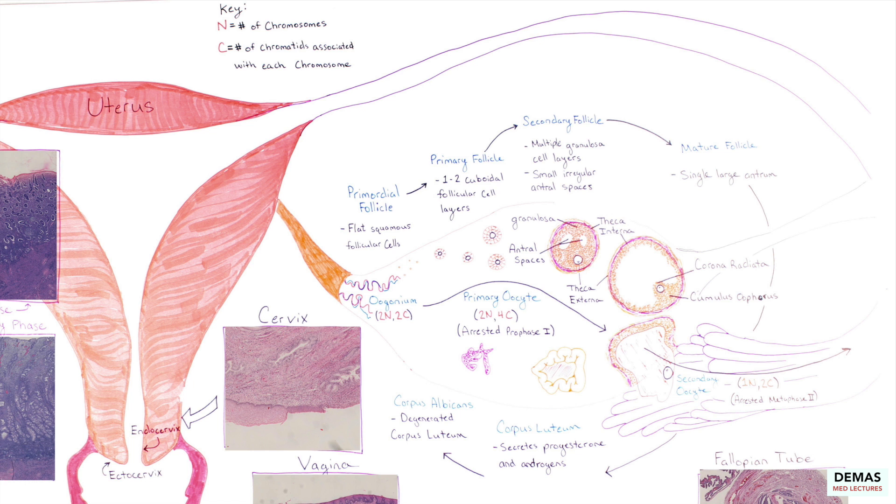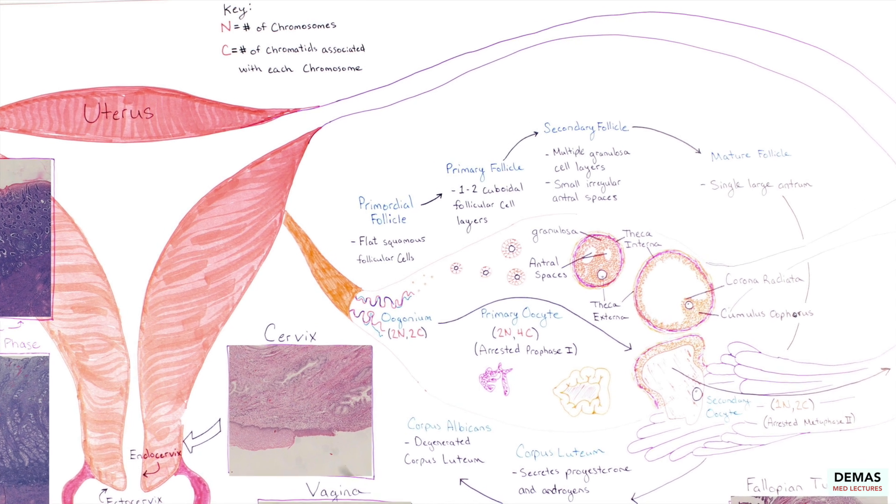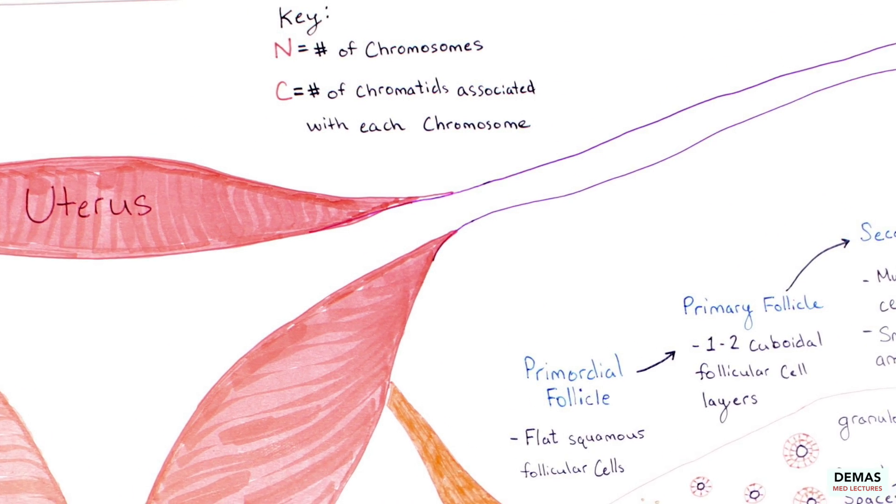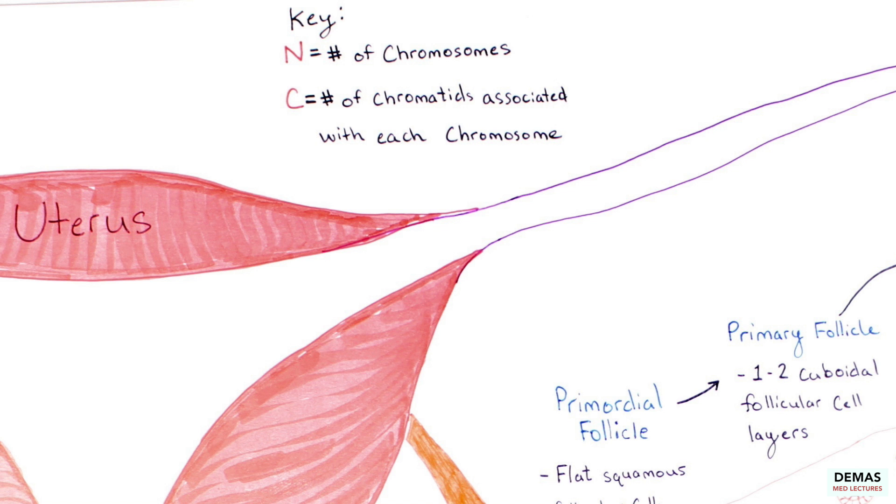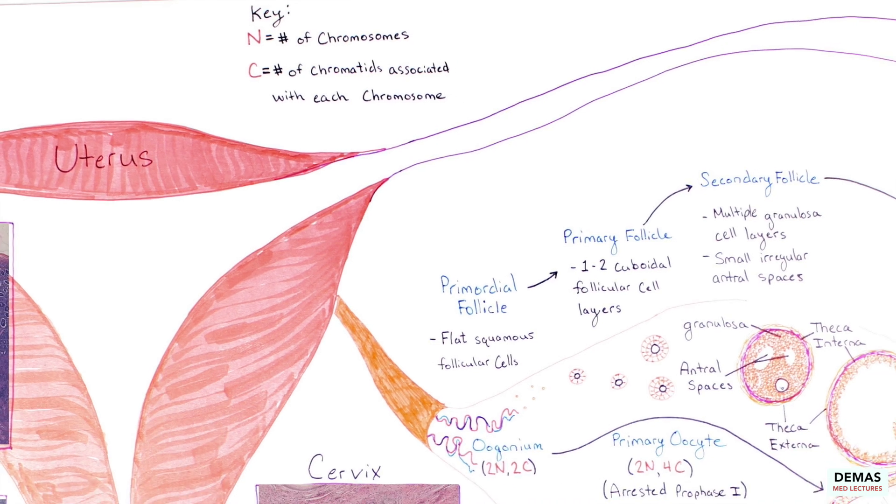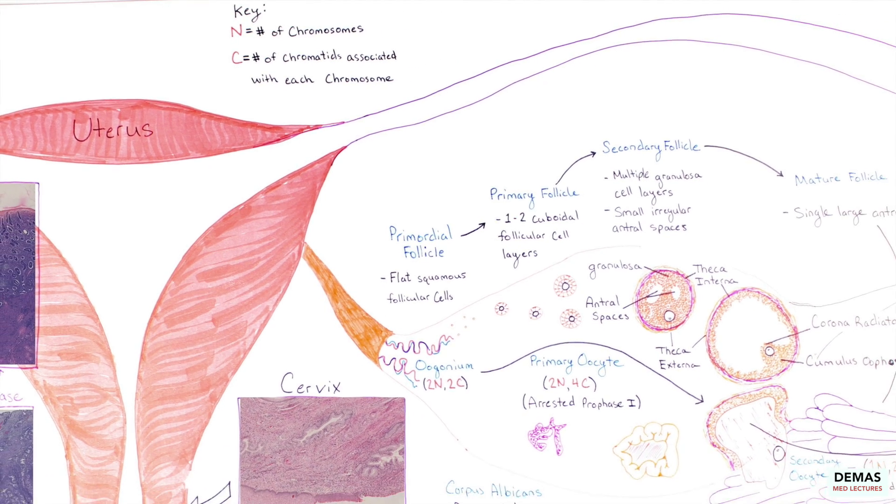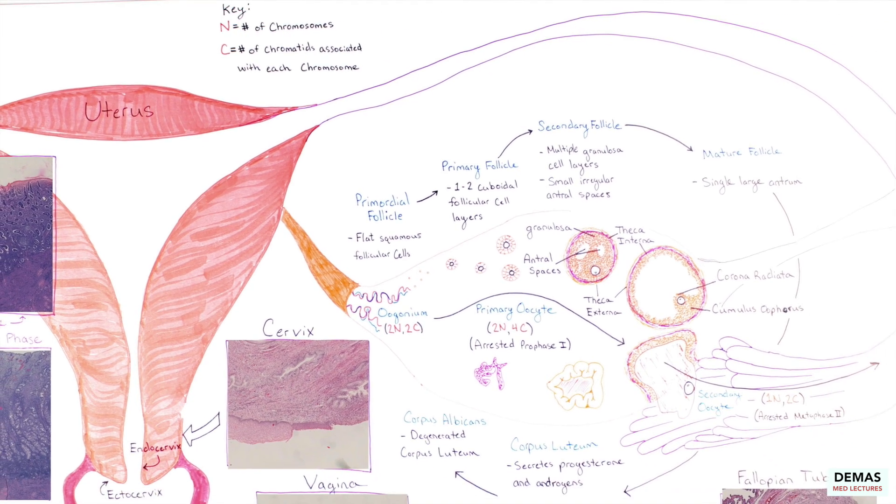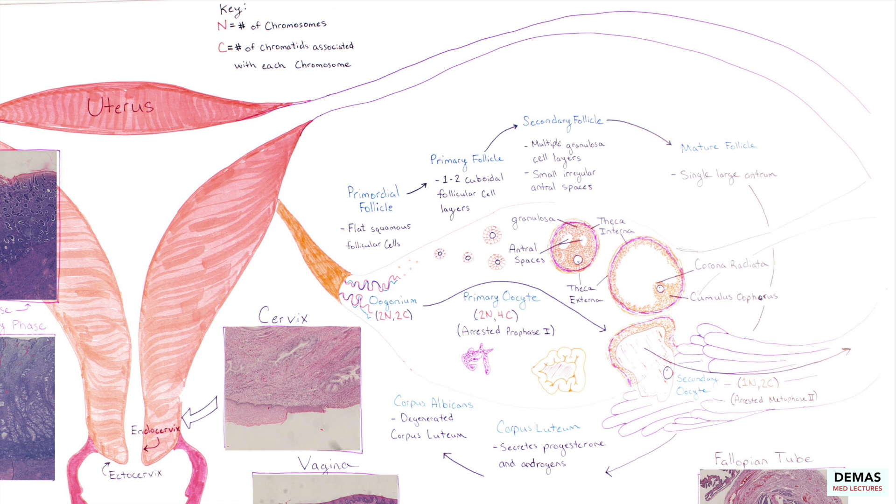The oocyte also matures and undergoes two rounds of meiosis in order to become a mature haploid ovum. Recall the N and C notation with N standing for the number of chromosome sets and C for the number of copies of each chromatid. I recommend that you commit to memory the genetic content in terms of N and C since this tends to be important for your understanding of oogenesis and are topics potentially tested on board exams.